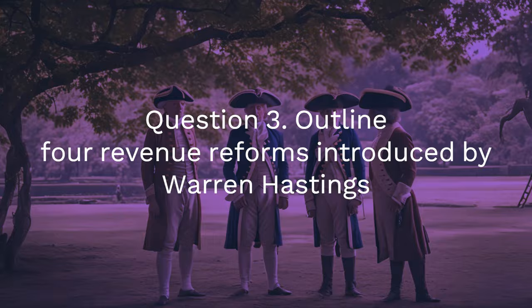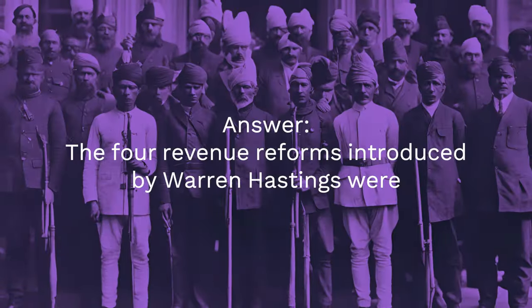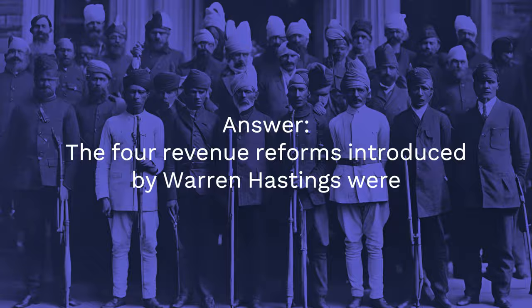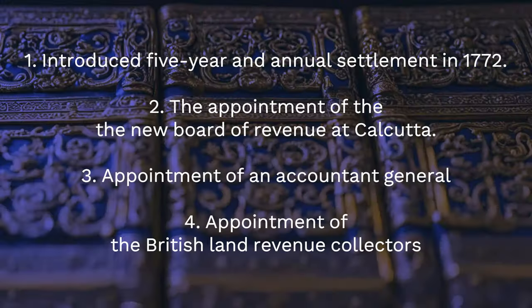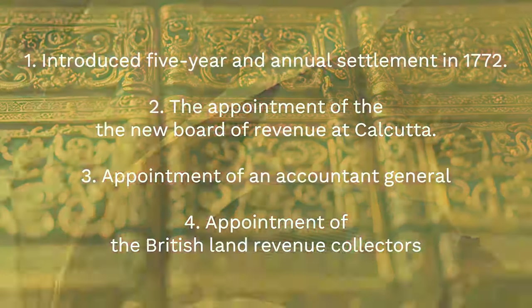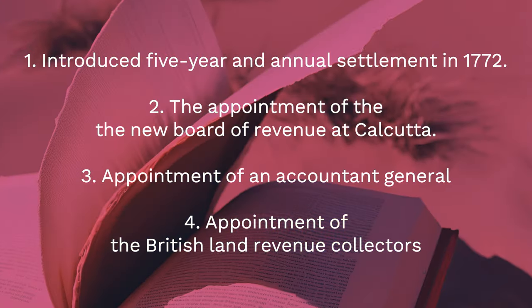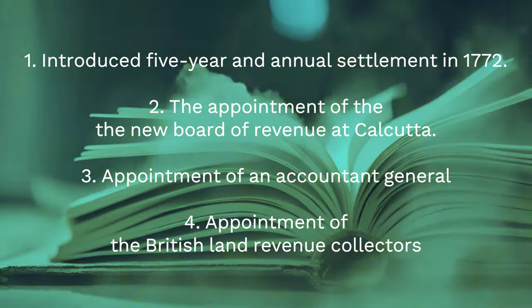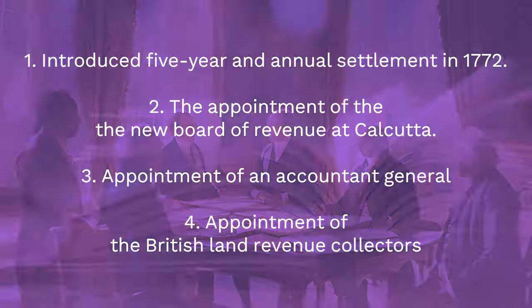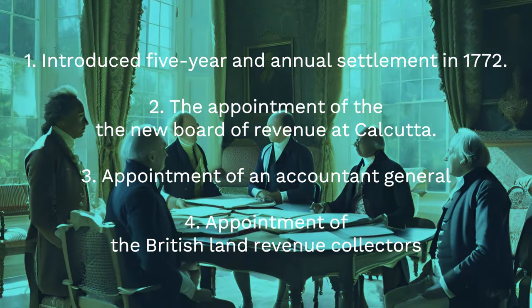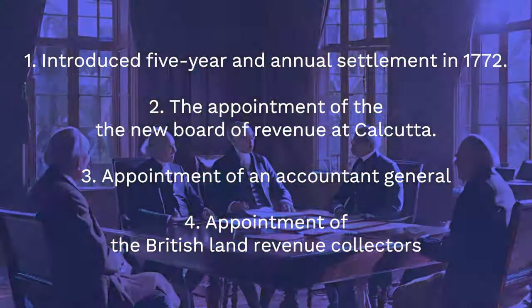Three, the transfer of treasury from Murshidabad to Calcutta; four, crushing of the robbers. Question 3: Outline four revenue reforms introduced by Warren Hastings. Answer: The four revenue reforms introduced by Warren Hastings were: one, introduced five-year and annual settlement in 1772; two, the appointment of the new Board of Revenue at Calcutta; three, appointment of an Accountant General; four, appointment of British land revenue collectors.